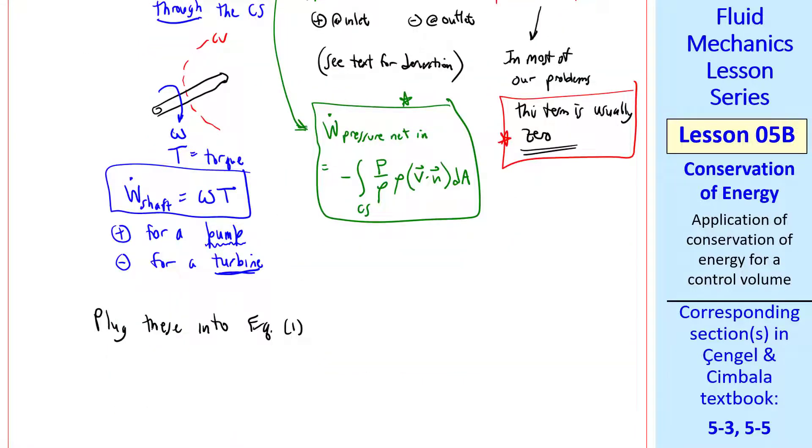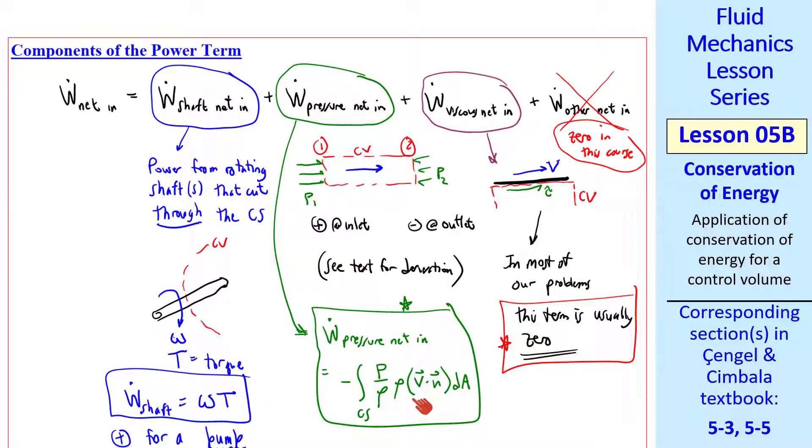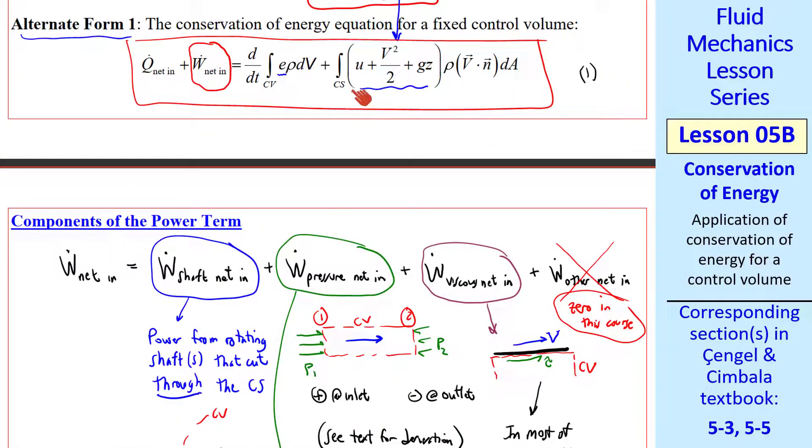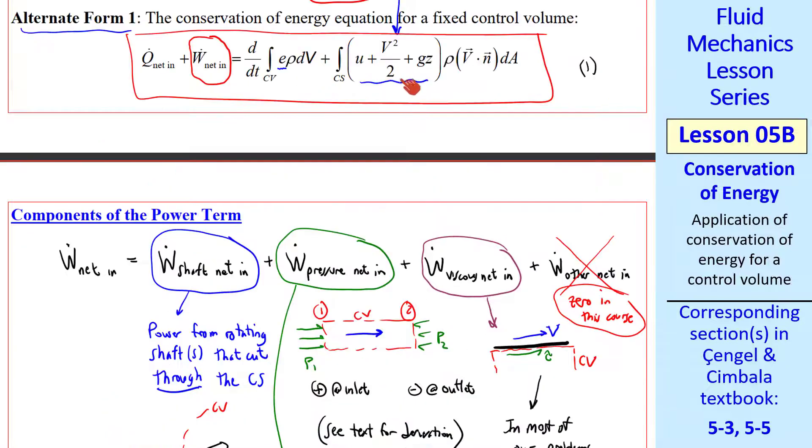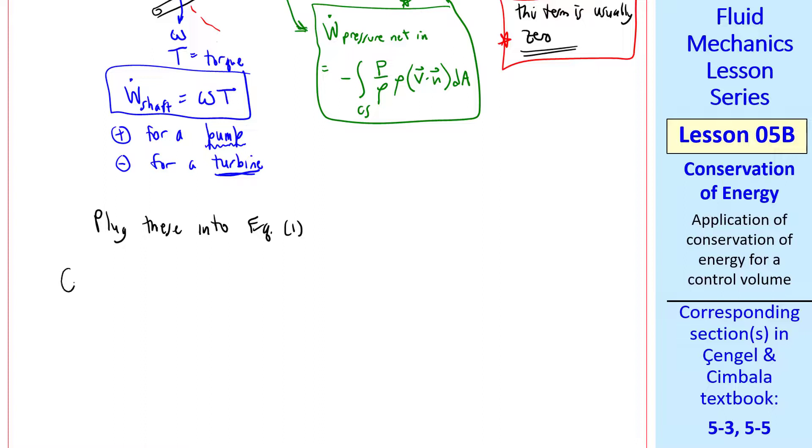You can have other power added, like electromagnetic forces acting on the fluid, but we won't consider any of those cases. So this last term will always be zero. Now let's plug all these into equation one. Notice that this pressure term has P/ρ and then ρV⃗·n̂ dA. And in the control surface integral of equation one, we have this grouping of terms times the same ρV⃗·n̂ dA.